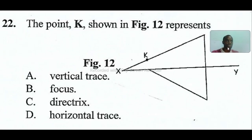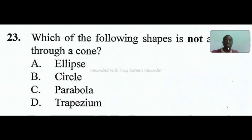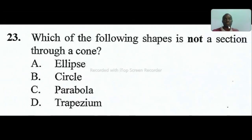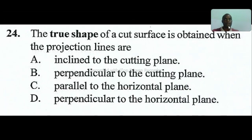Question twenty-two: the point K shown in figure twelve represents the vertical truss, not the horizontal one. Question twenty-three: which of the following shape is not a section through a cone? The correct answer is D, trapezium. Question twenty-four: the true shape of a cut surface is obtained when the projection lines are perpendicular to the cutting plane. At 90 degrees to the cutting plane.